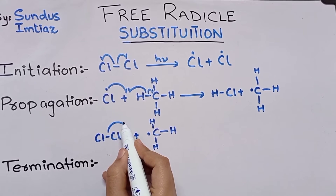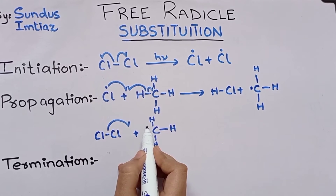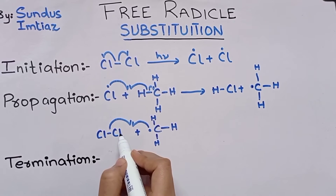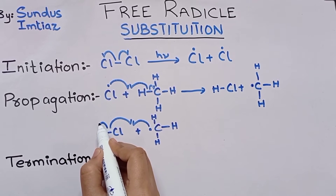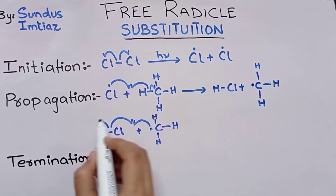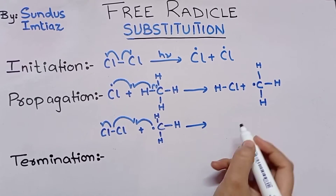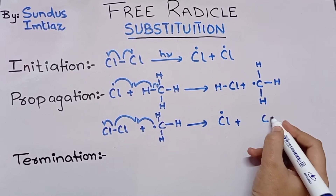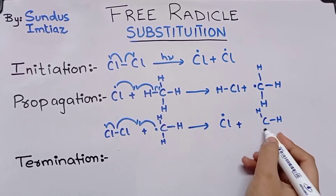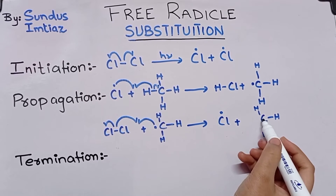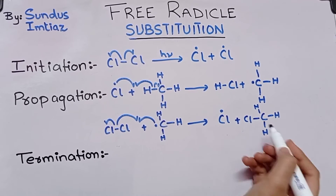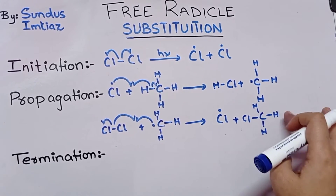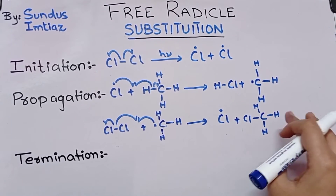This unpaired electron shifts here and another unpaired electron shifts here, making a bond with the carbon. The Cl–Cl bond forms, and another unpaired electron moves towards the halogen, forming a new chlorine free radical. The hydrogen is replaced with the halogen group. That is why it is called the propagation step — it is a chain reaction that continues until all the hydrogen is substituted.